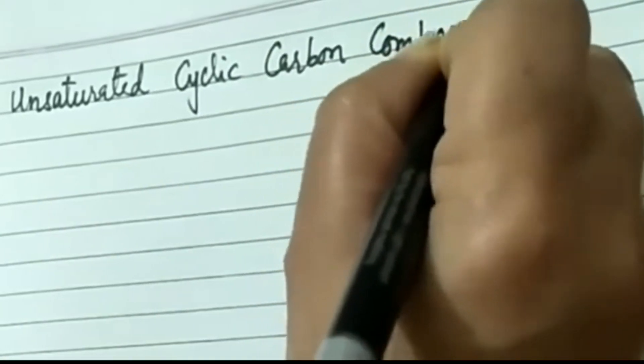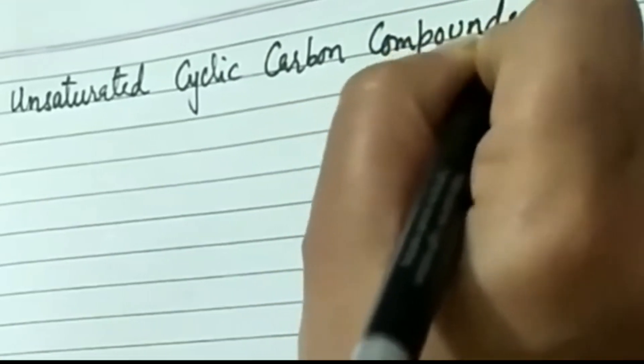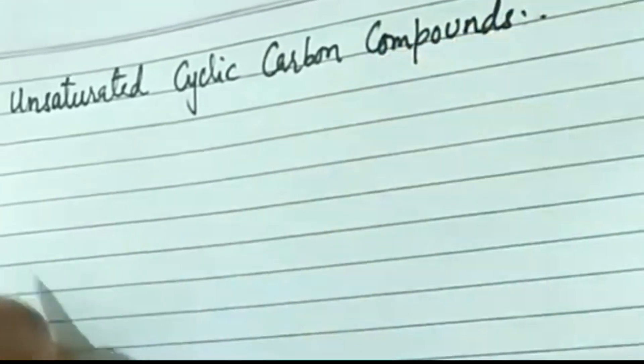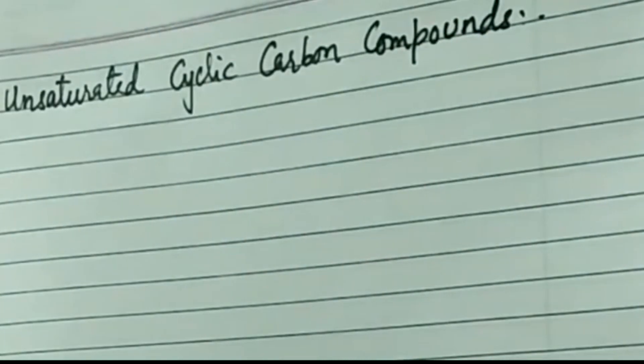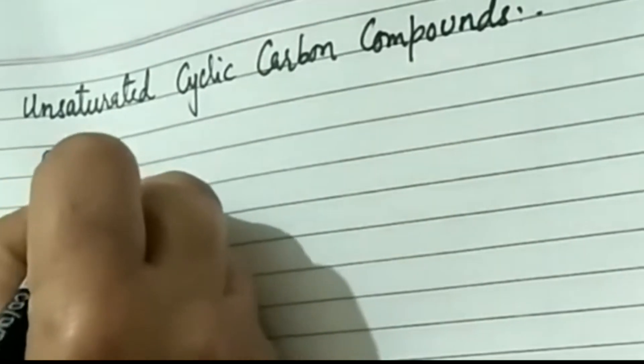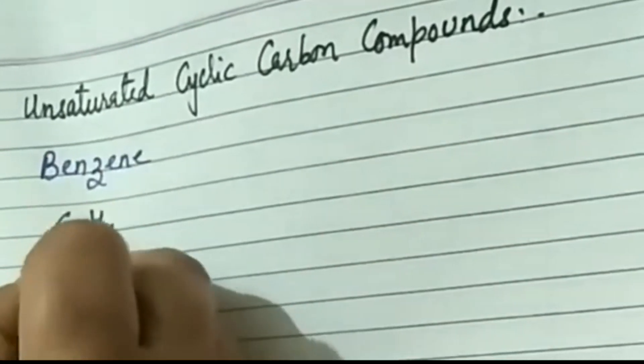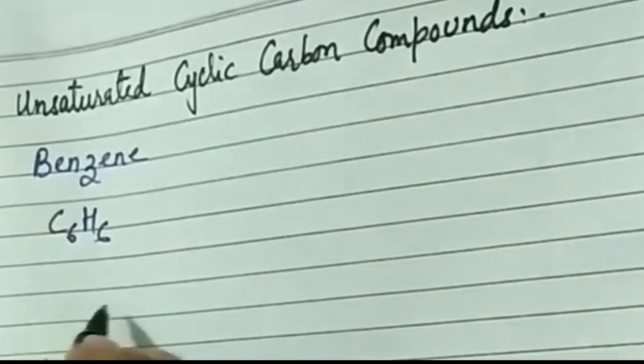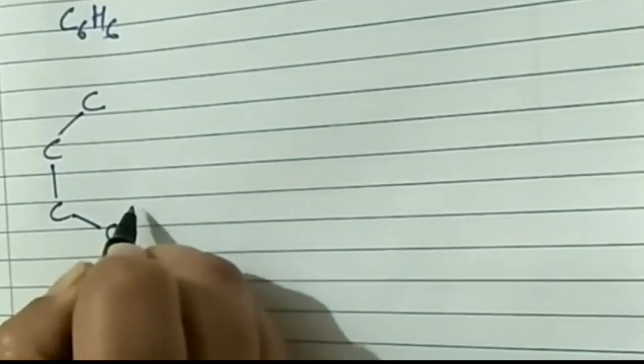We will study unsaturated cyclic carbon compounds with the example of benzene. Benzene is an unsaturated cyclic carbon compound. The molecular formula of benzene is C6H6 — it contains six carbon atoms and six hydrogen atoms.